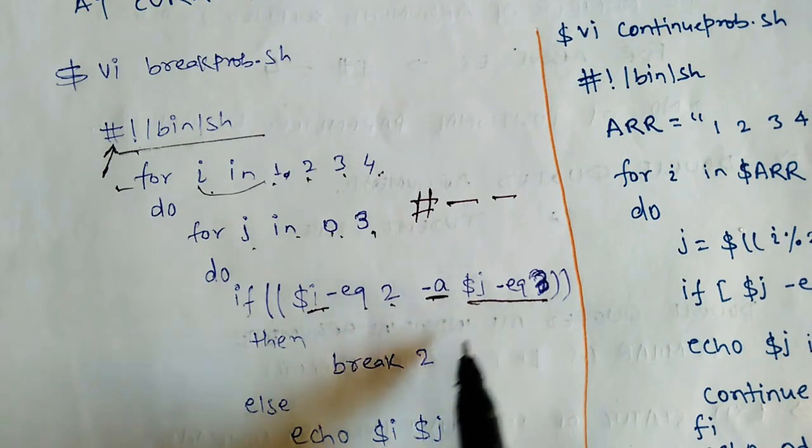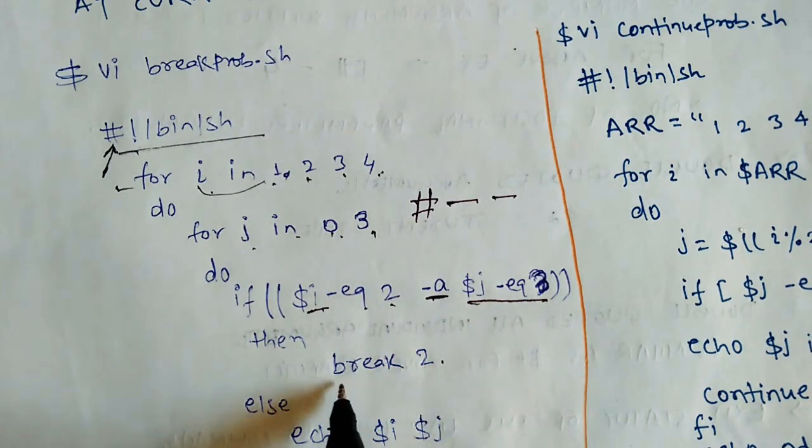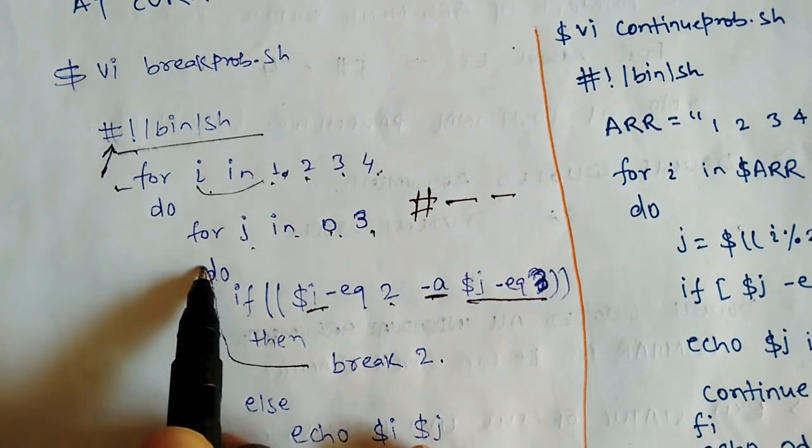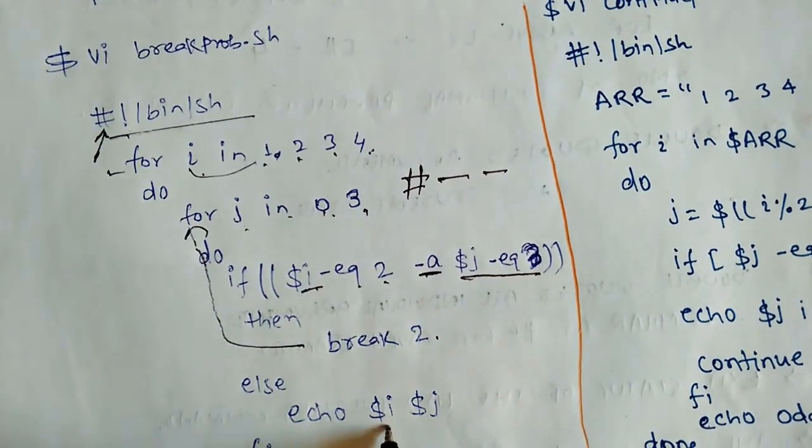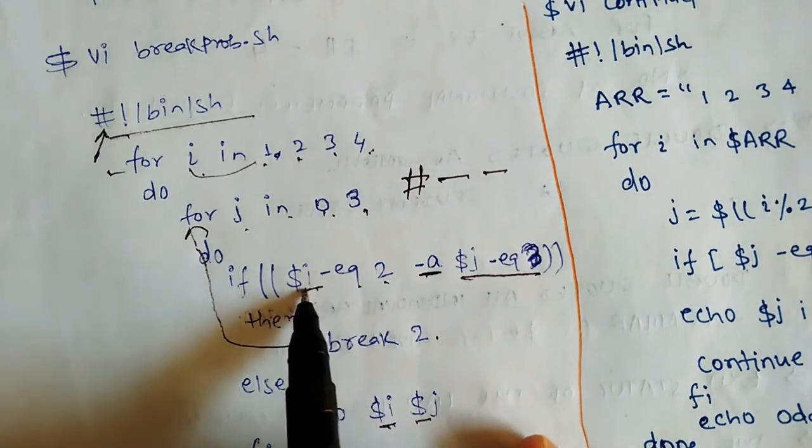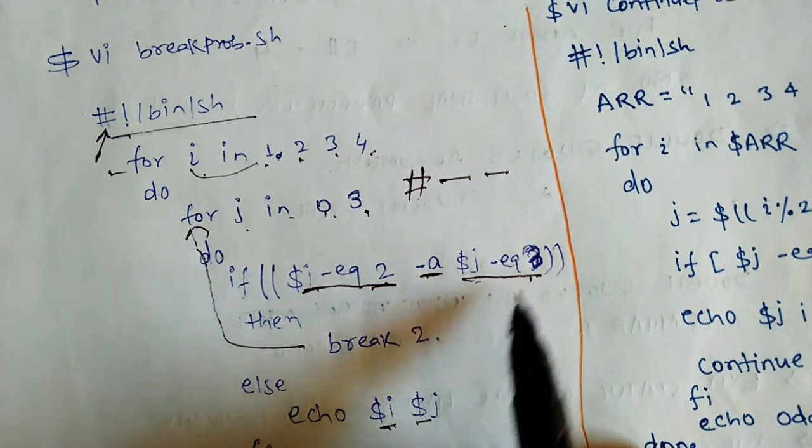Break. It means that we will terminate this loop. We will terminate this loop and we will go further. Else, echo $i, $j. So if this is such a condition, $i is equal to 2 and $j is equal to 3, we will terminate this loop.